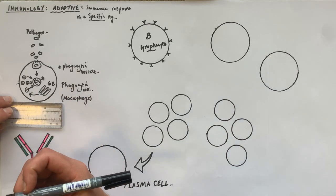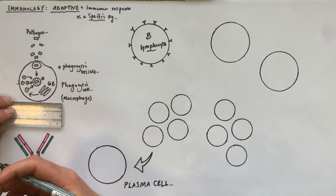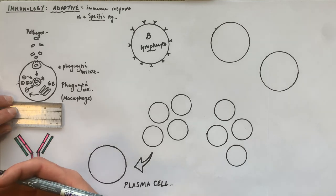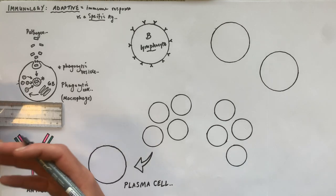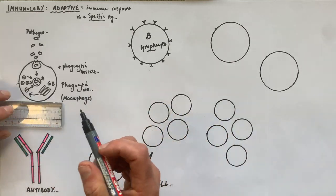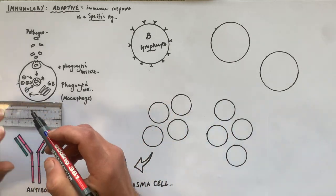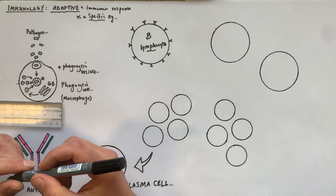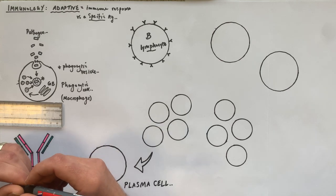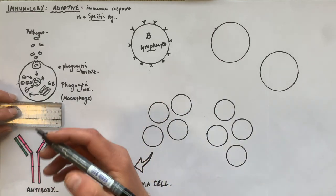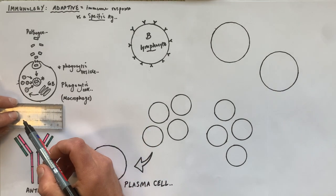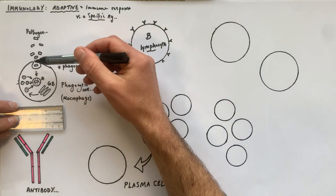All molecules of the pathogen get hydrolyzed — for example proteins and their peptide bonds will be hydrolyzed into shorter fragments and then by exopeptidases into amino acids. Any polysaccharides like peptidoglycan will also be hydrolyzed into their individual monomers, clearing the pathogen from the infection site.